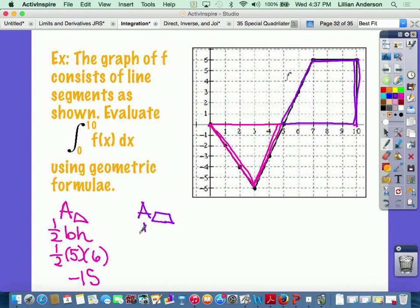For a trapezoid, the formula is one-half h times b1 plus b2. The height is six. Your two bases are three and five.